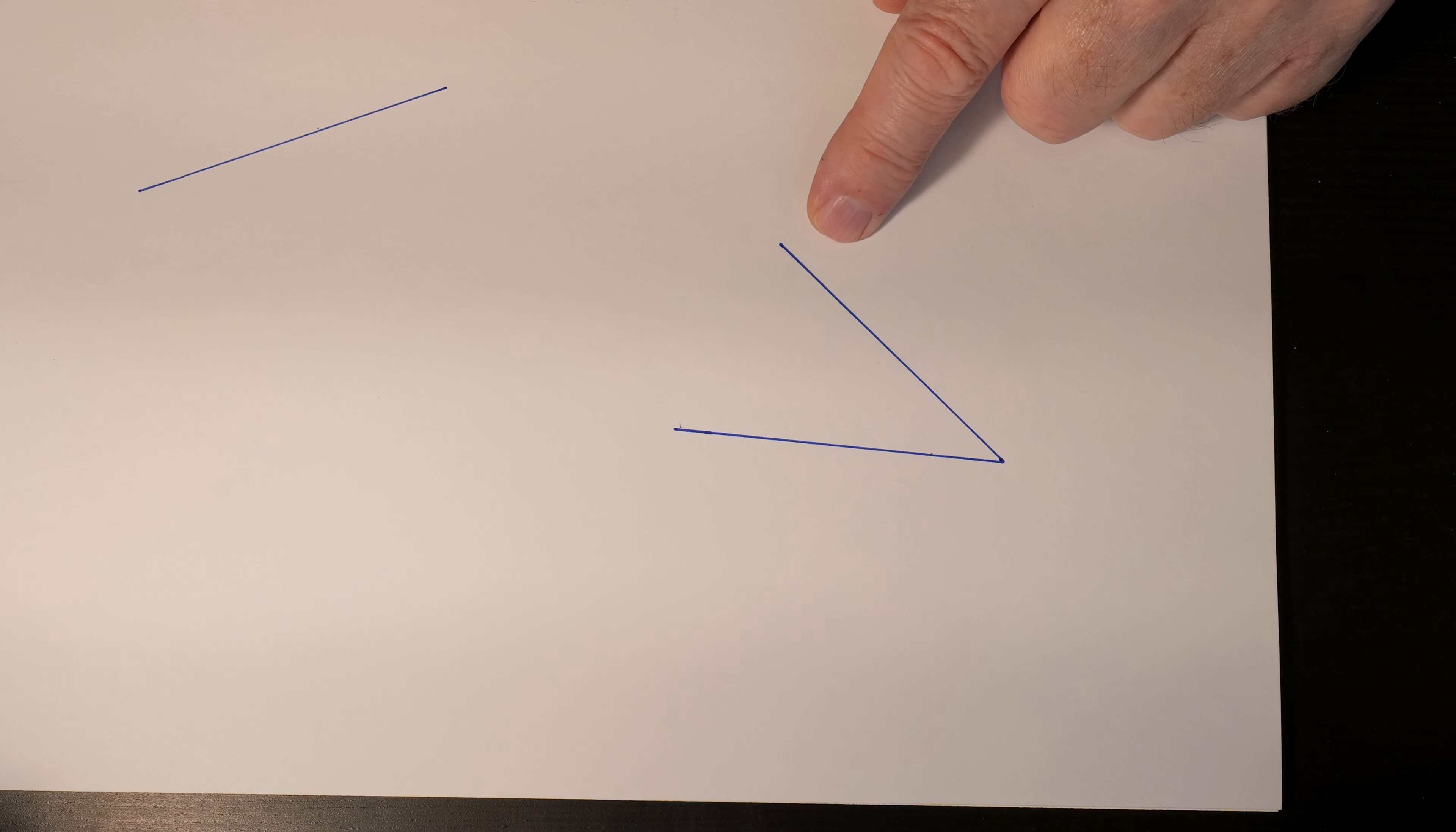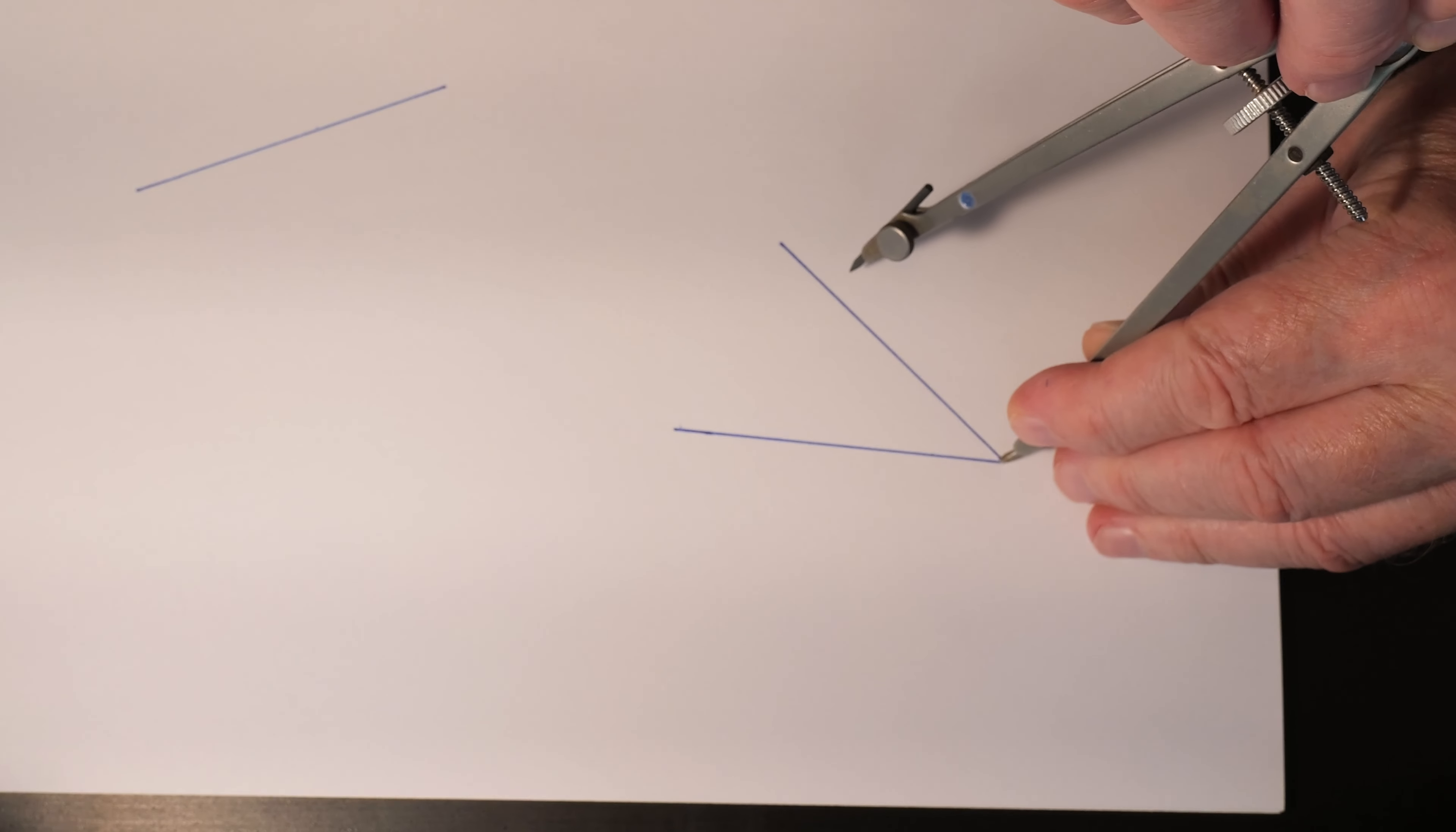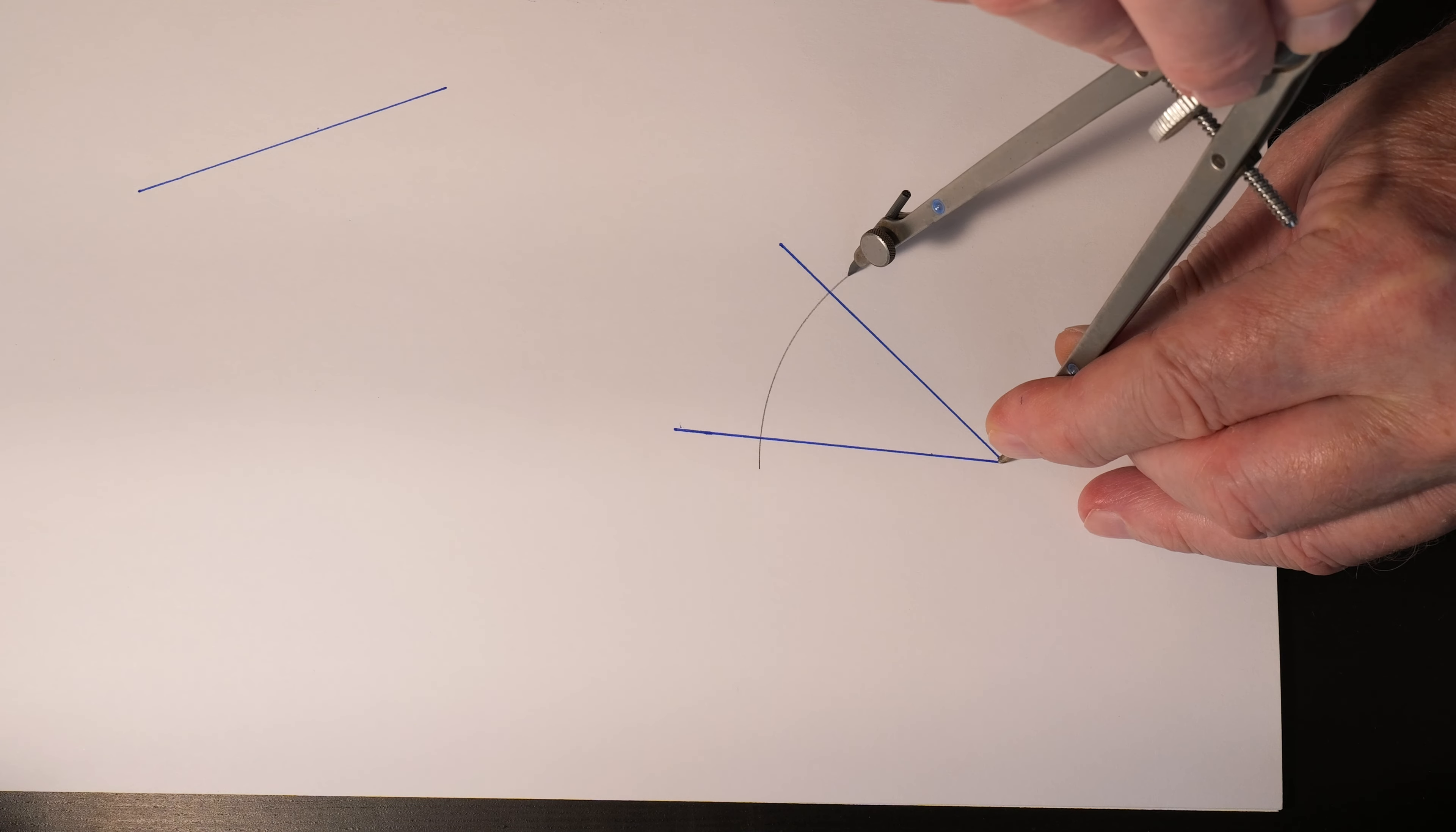Let me show you how. Take your compass and set the point on the vertex of the angle, and then you're going to draw an arc across both legs of the angle.